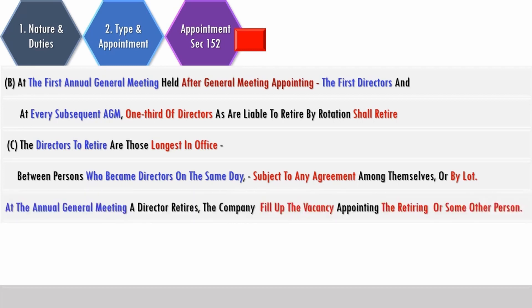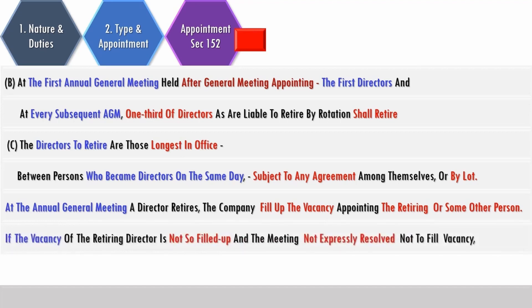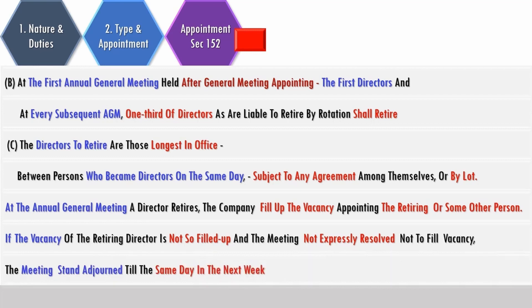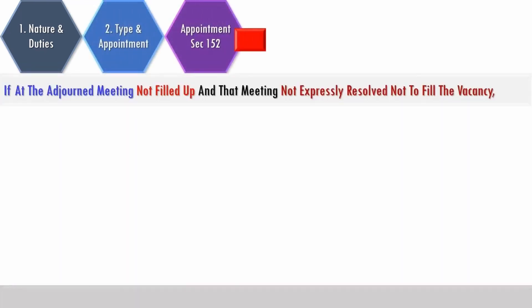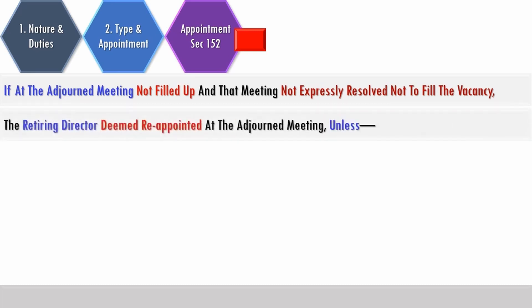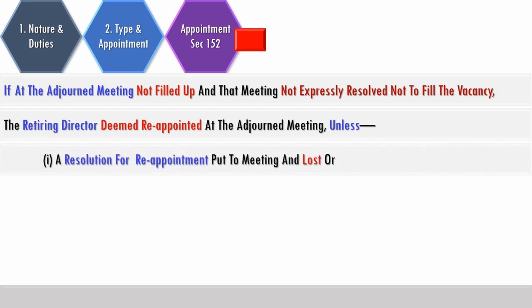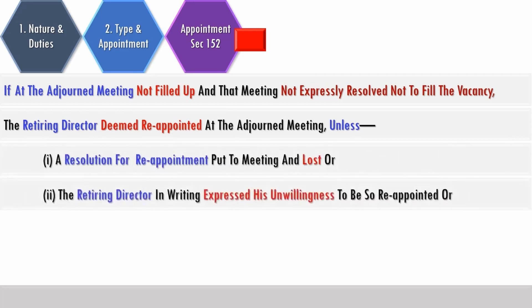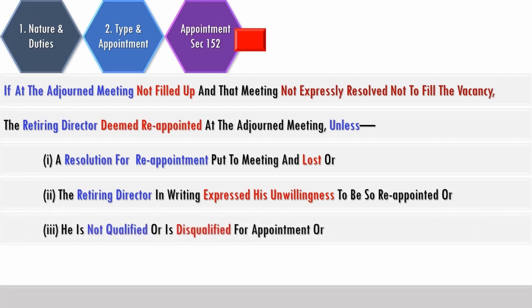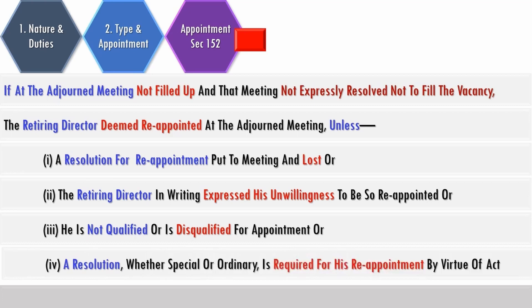At an AGM, when a director retires, the company fills up the vacancy by appointing the retiring director or some other person. If the vacancy is not filled and the meeting has not expressly resolved not to fill it, the meeting shall stand adjourned to the same day in the next week. If at the adjourned meeting it is still not filled, the retiring director is deemed reappointed unless a resolution for reappointment was lost, the retiring director expressed unwillingness to be reappointed, they are not qualified or disqualified, or a special or ordinary resolution is required for reappointment.